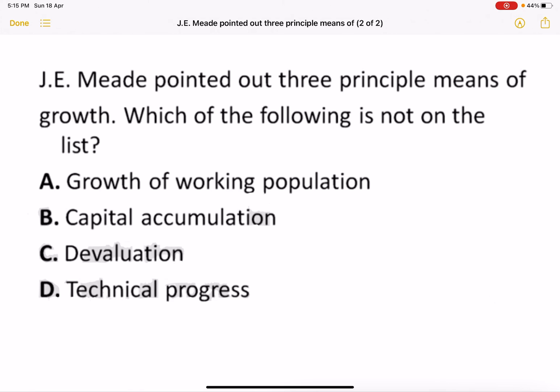Next question: JE Meade pointed out three principal means of growth. Which of the following is not on the list? Growth of working population is there, capital accumulation is there, technical progress is there. So capital, population, and technology, everything is there. Devaluation is not in this model. So C is the correct option.